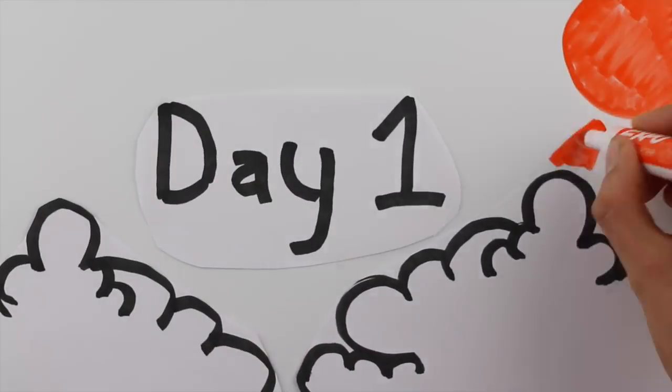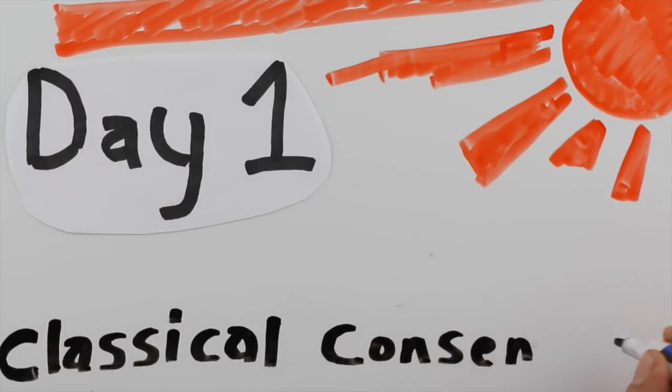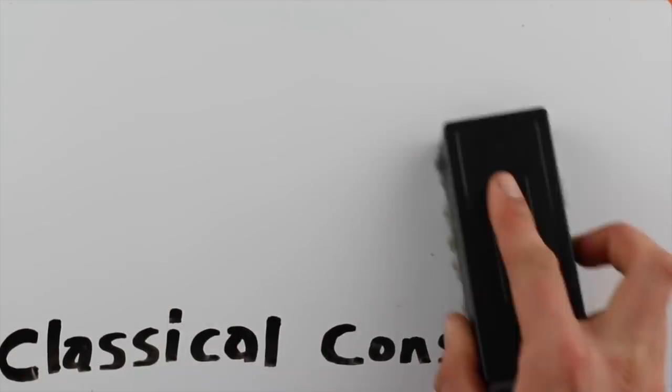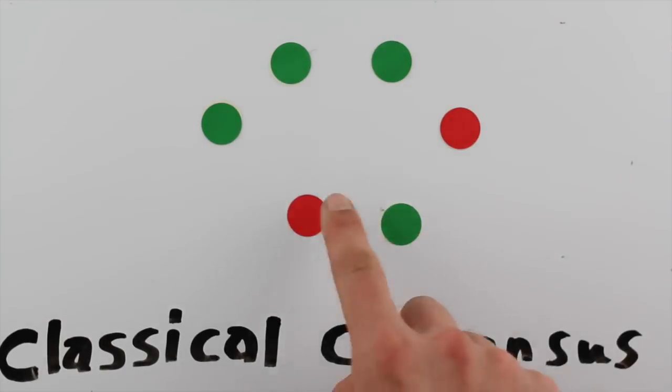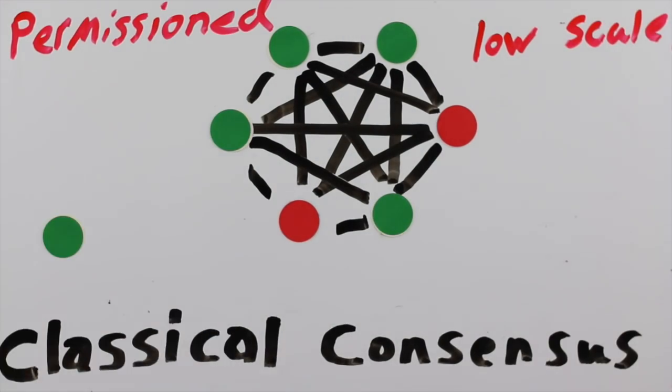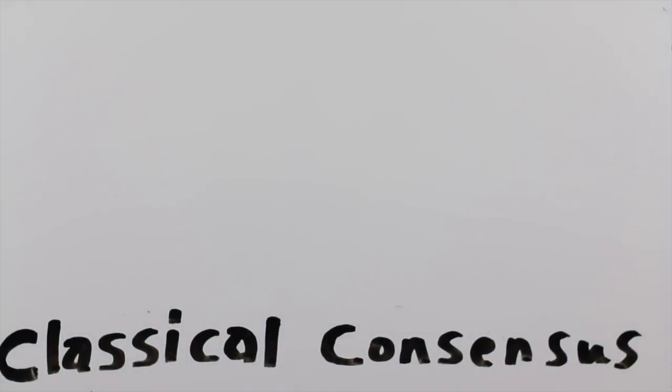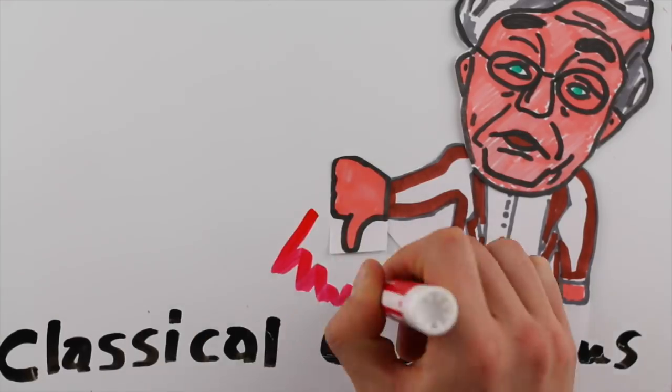On the first day, Leslie Lamport and Barbara Liskoff created Classical Consensus. Classical consensus doesn't really work well for a decentralized currency. All of the participating nodes have to know each other, and with such a high communication cost, it doesn't scale very well. So leaders in this style of consensus are usually elected by an authority, rather than having a way to drop in and out of the system. It's a permission network. And as such, Satoshi looked upon Classical Consensus and saw that it was not good for Bitcoin.